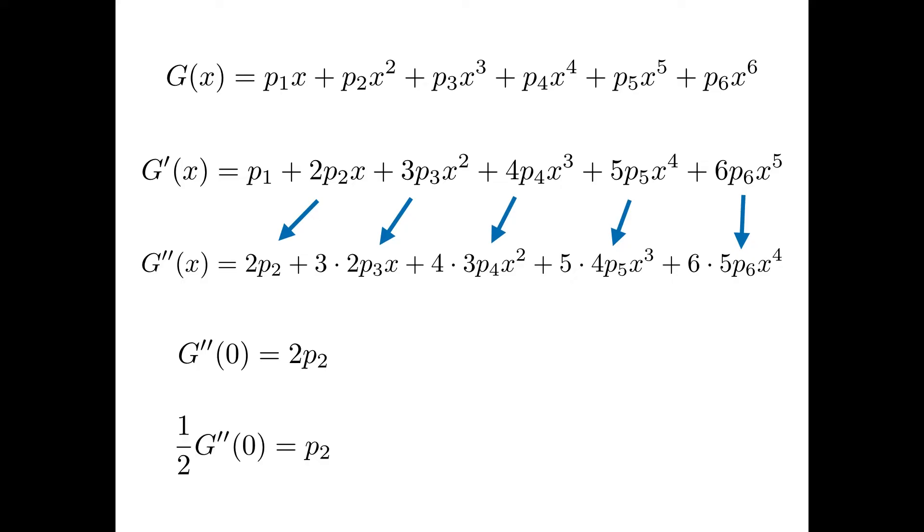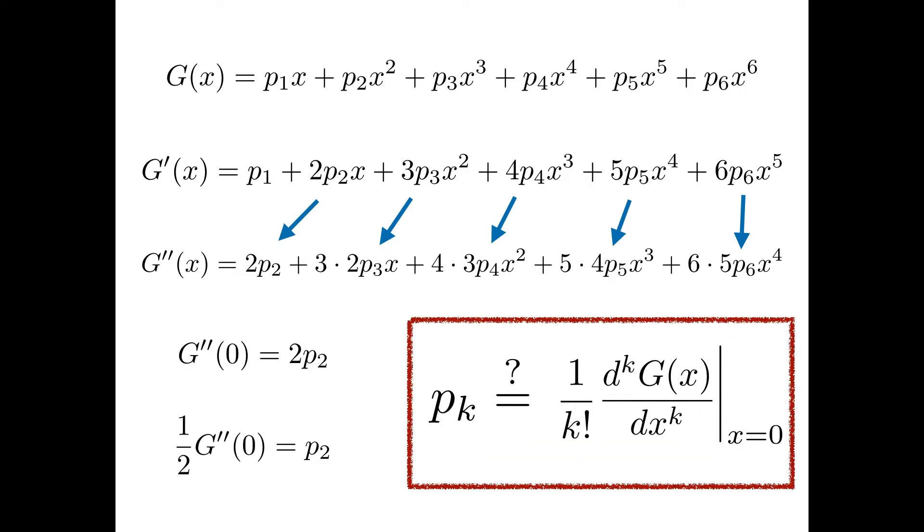This means that if you want to get the value of pk, we just need to take the derivative of G(x) k times, evaluate it at x equals 0, and then divide with some appropriate constant. This constant is actually k factorial, and I'll let you prove it. Now we can get the probability values back from our generating function.